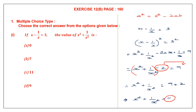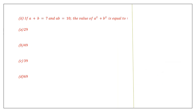So our answer is 11, which is option C. Question 2: if a plus b is equal to 7 and ab is equal to 10, find the value of a squared plus b squared.